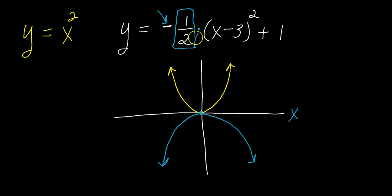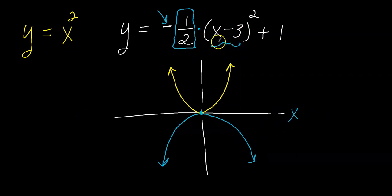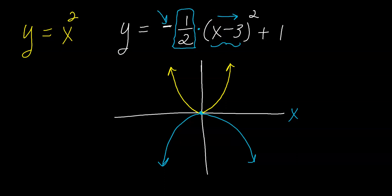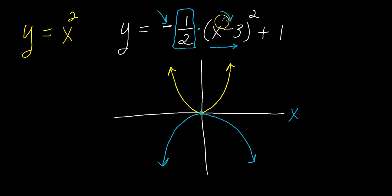That's what the negative one-half causes. Then I look at the x minus 3, which is inside the parenthesis and causes the graph to move left or right. Because the minus 3 is attached with x, and x is horizontal. You have to think backwards with horizontal movement — so this minus 3 does not cause the graph to move left three units; it causes it to move right three units.